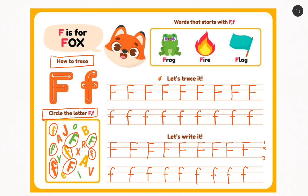Now I believe you can write the alphabet F on your own and you'll know how to write the small F as well. Get a piece of paper and practice how to write the alphabet F by watching this video over and over again until you know how to write it. F can stand for Fox, Frog, Fire, or Flag and many other words that start with F. Thank you so much for watching, and I will see you in the next video where we will learn how to trace the next alphabet after F. Thank you once again and I will see you in the next video. Bye bye!